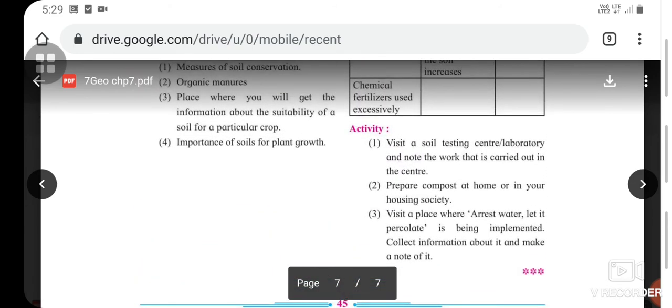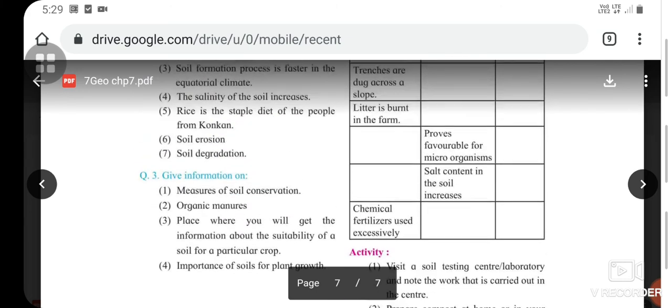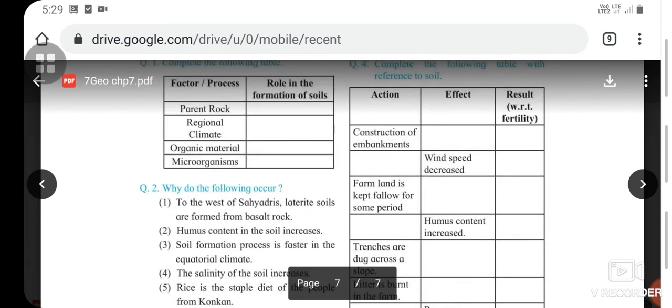Here are a few activities for you: First, visit a soil testing center or laboratory and note the work that is carried out. Second, prepare compost at home or in your housing society. And last, visit a place where 'Arrest water, let it percolate' is being implemented. Collect information about it and make a note. With this activity explanation, we come to the end of the chapter on soils. Now just read the chapter, go through it, and complete the exercise. Thank you.